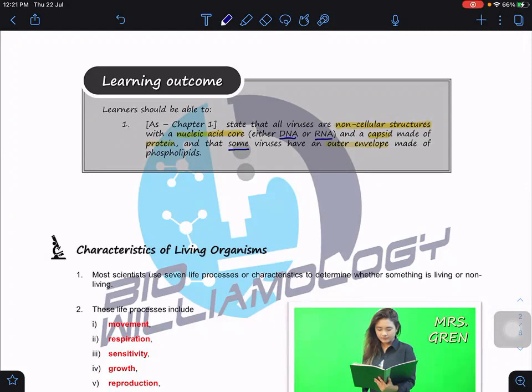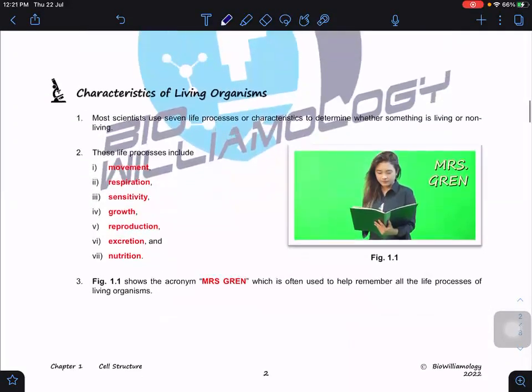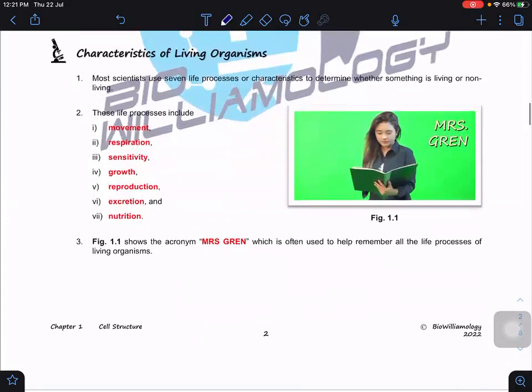We start today's class by looking at characteristics of living organisms. This is how we define or classify a thing whether it's living or non-living, based on seven life processes carried out by organisms.